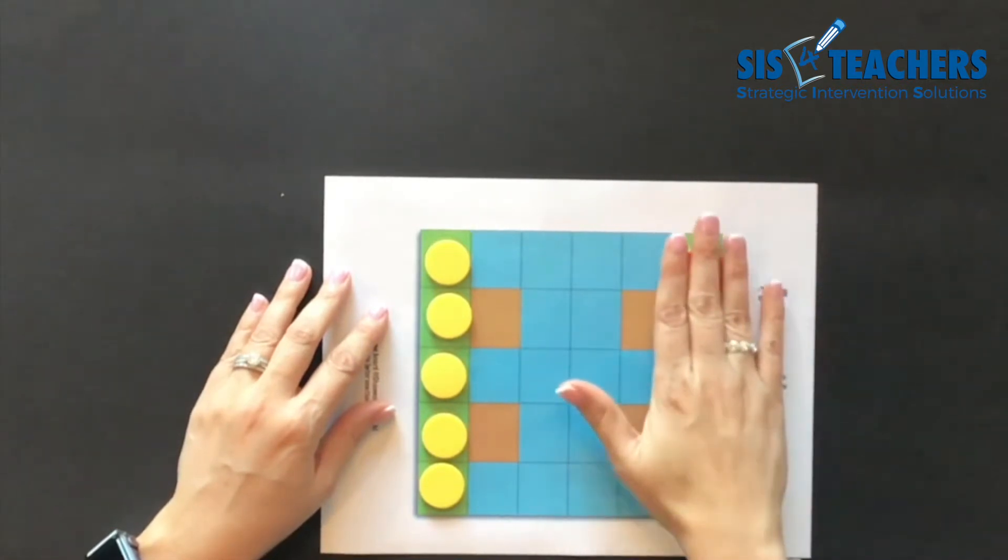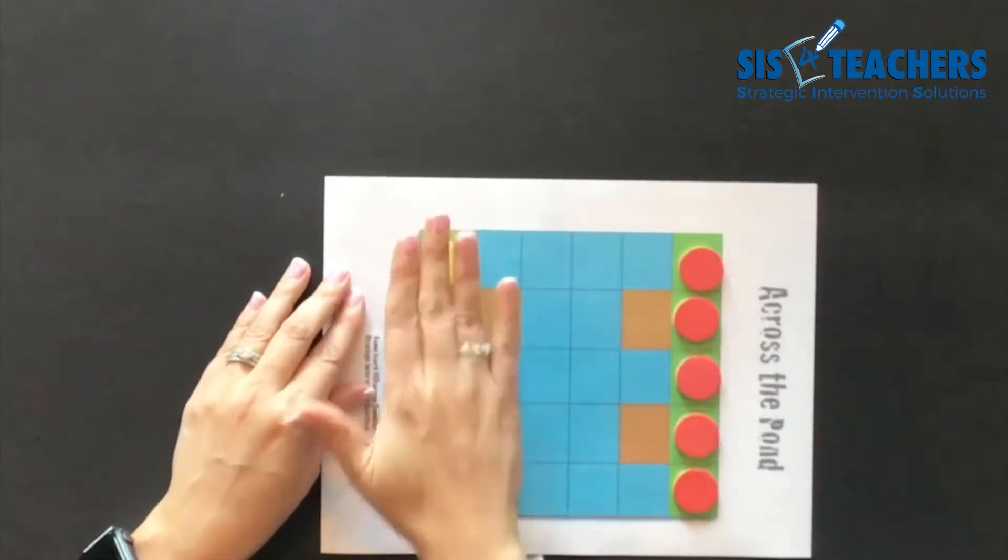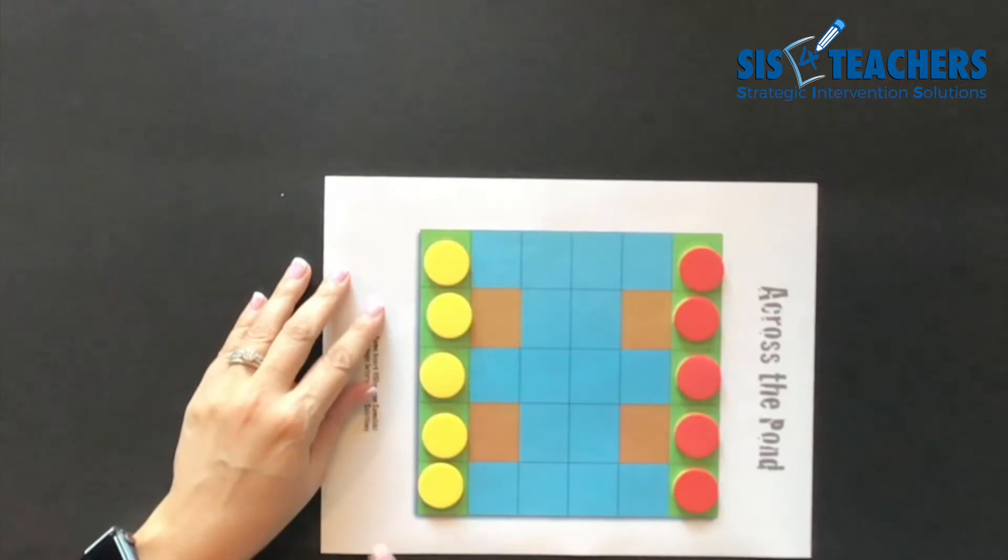My partner is trying to get her five frogs onto my five lily pads. I'm going to be thinking about how I can strategically block her from getting to my lily pads where I can eventually get in. She's also going to be using those same strategies as we go.